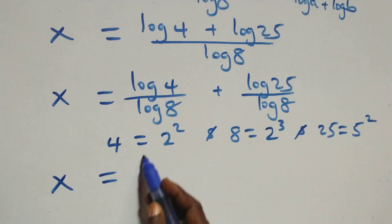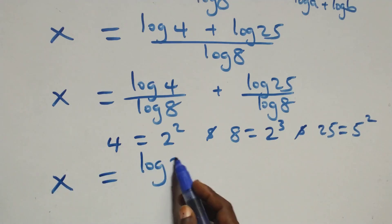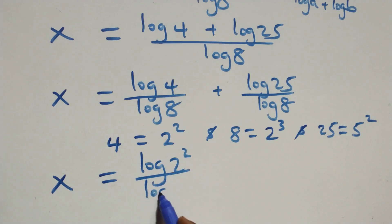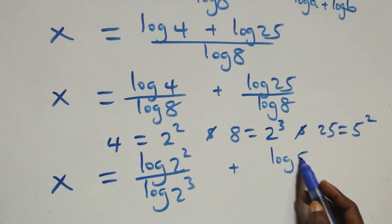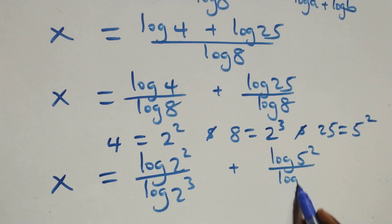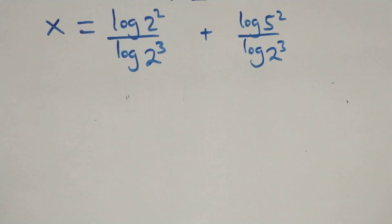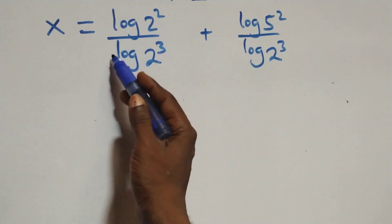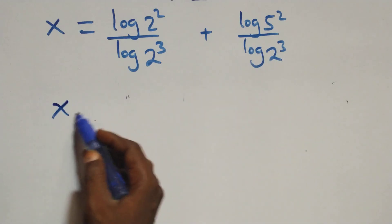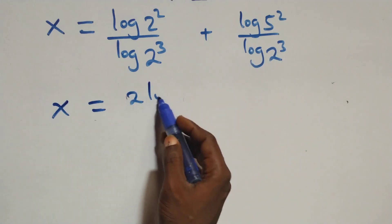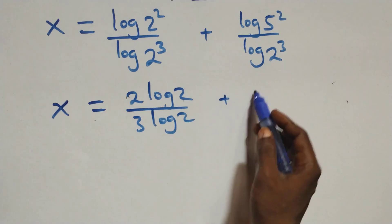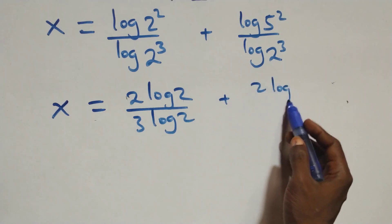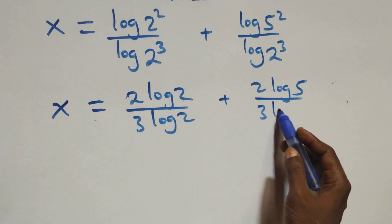This equation becomes x equals to log 2 squared over log 2 cubed, plus log 5 squared over log 2 cubed. We then apply the power rule of logarithm — 2 comes down here, 3 comes here, also 2 comes here and 3 comes here — and we have x equals to 2·log 2 over 3·log 2, plus 2·log 5 over 3·log 2.